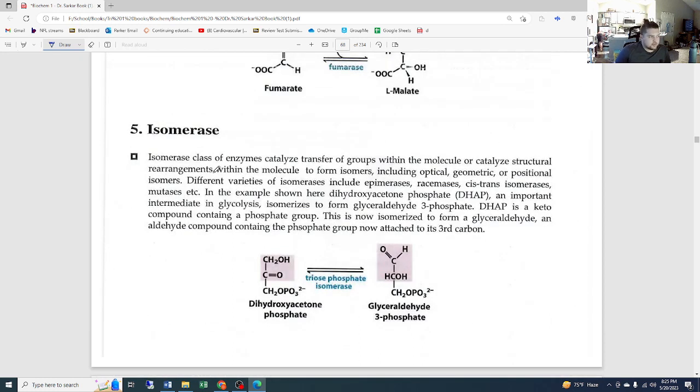Isomerase. The isomerase class of enzymes catalyze transfer of groups within the molecule or catalyze structural rearrangements within the molecule to form isomers. Remember, isomers means it has the same chemical formula, but everything is bound together differently. So all the same components but kind of rearranged, including optical, geometric, or positional isomers. Different varieties of isomerases include epimerases, racemases, cis-trans isomerases, mutases, etc. In your notes right here, include all of these. Knowing those names will help you identify them—especially mutases, you'll often find either the word isomerase or mutase.